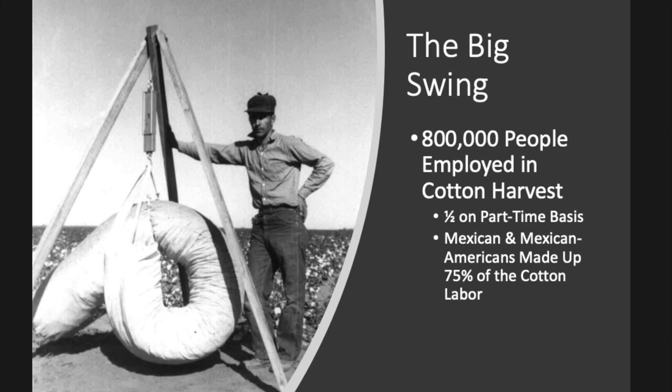One thing to highlight is the agricultural harvest sometimes known as the Big Swing. Nearly a million people were employed in this cotton harvest. This was centered in Texas but also trekked up to the American Midwest — into Michigan, Montana, and Minnesota — picking beets. A lot of this was done on a part-time basis. Mexican and Mexican Americans made up about 75% of the cotton labor.